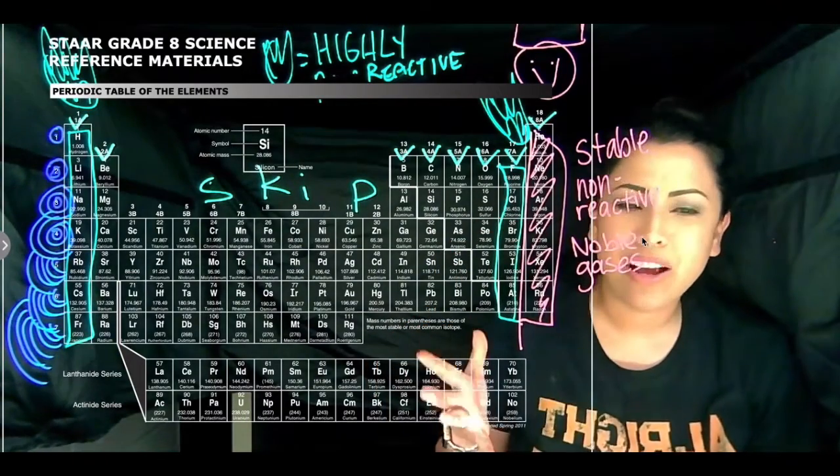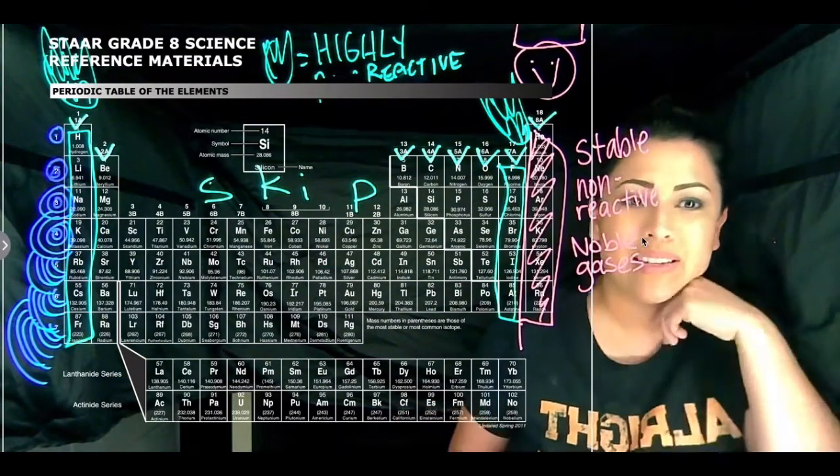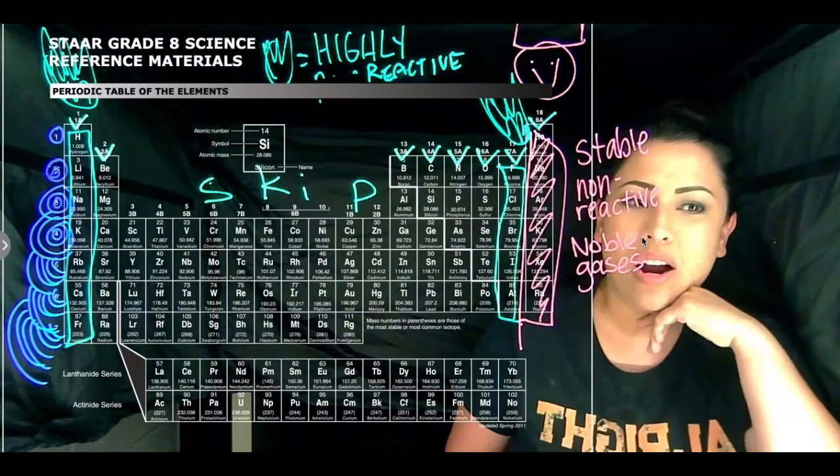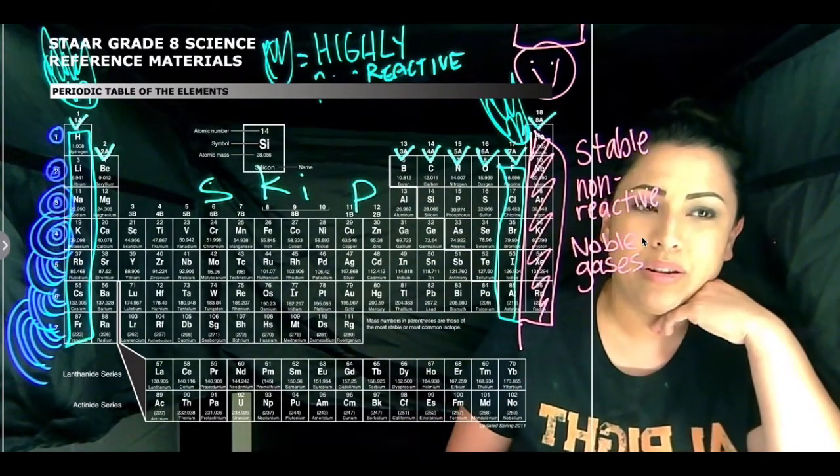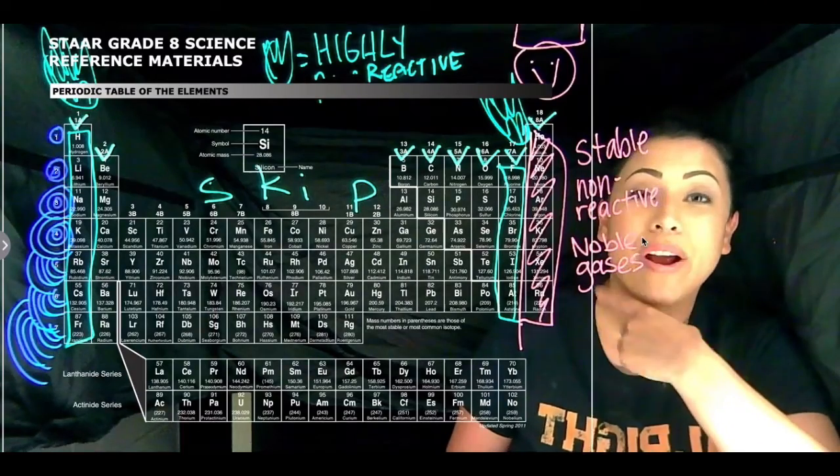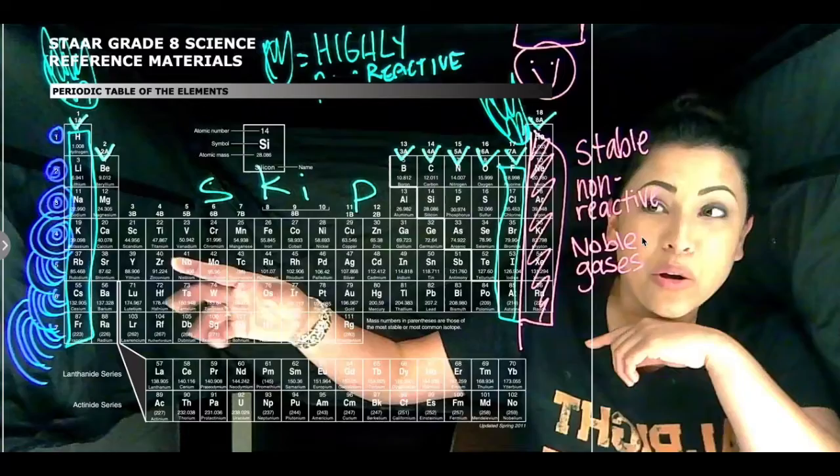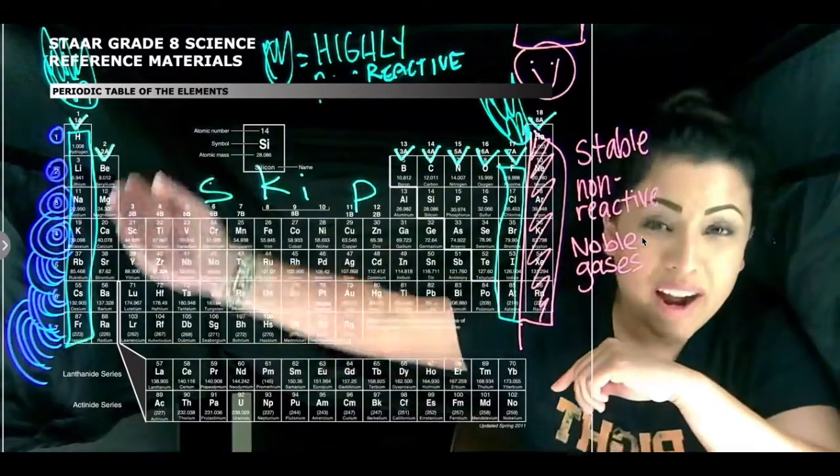And now you probably also labeled already the metals, nonmetals, and metalloids. Well, now we can decide which is our highly reactive metal group. Where are the metals at? Yeah, they're over here. So which group are metals and highly reactive? Group one.